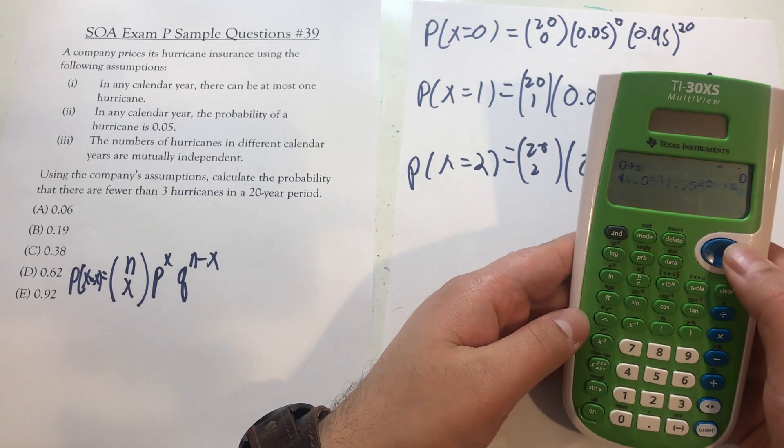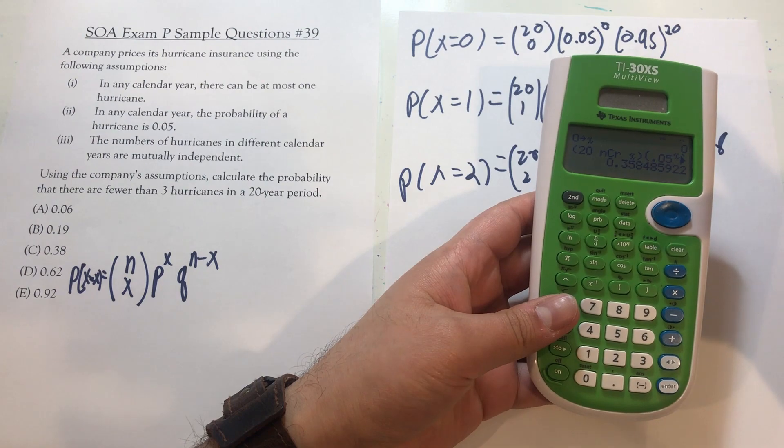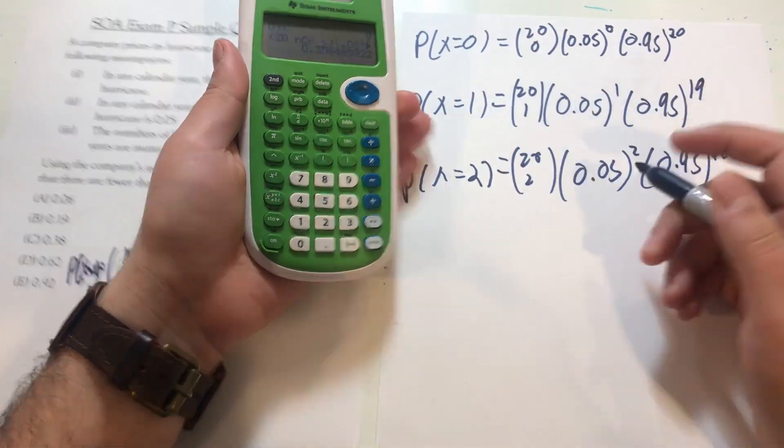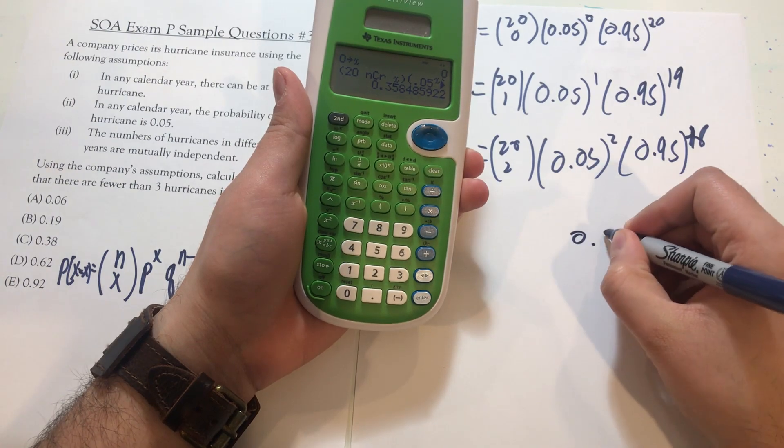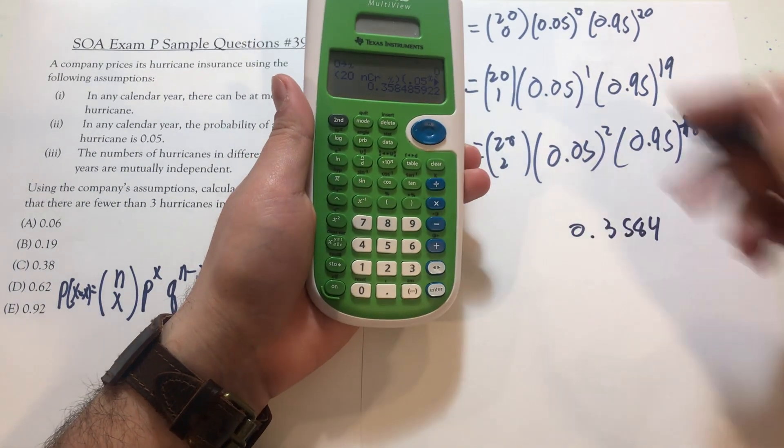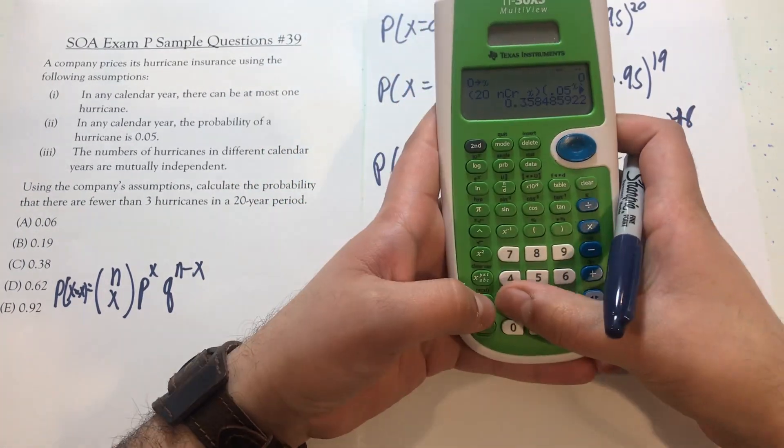And anytime I want to do a new one, this is especially helpful the more you do. I just plug in a new value. So for when x is equal to zero, the probability of zero hurricanes is 0.3584, plus exactly one hurricane.